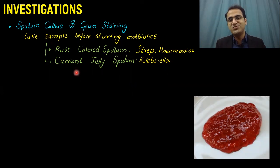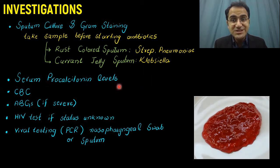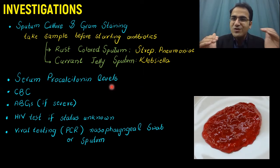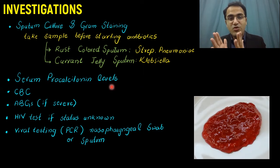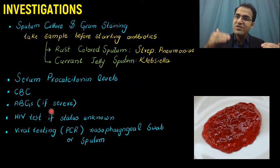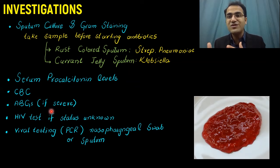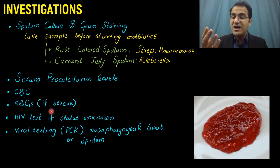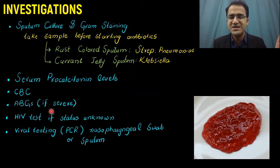Serum procalcitonin levels are elevated in bacterial infections, helping differentiate viral from bacterial causes — though this use is slightly controversial. You should also go for CBC. In severe pneumonia, arterial blood gases (ABG) are important because the patient may be hypoxemic, may have developed CO2 retention, or respiratory failure. To diagnose the type of respiratory failure and decide on ventilator support, ABGs are a must in severe cases. In mild pneumonia, simple pulse oximetry is sufficient.